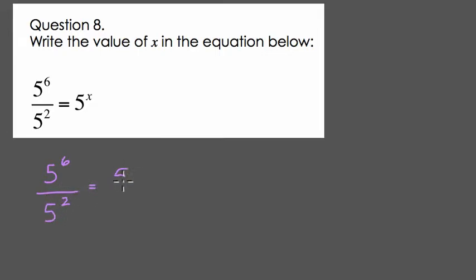I want to write these 5s out. There aren't too many of them, so I can see the structure of this problem. There are six 5s in our numerator and two 5s in our denominator.